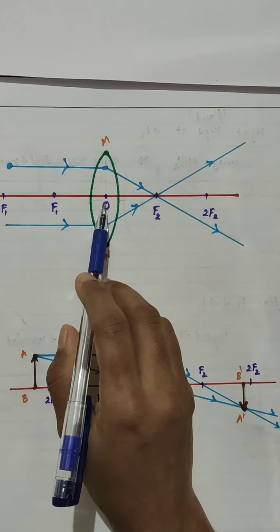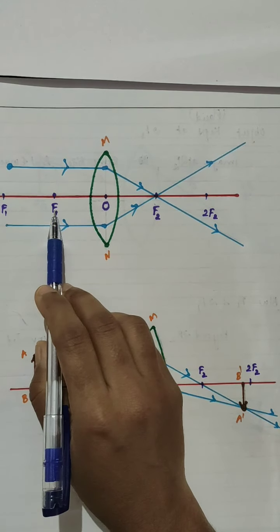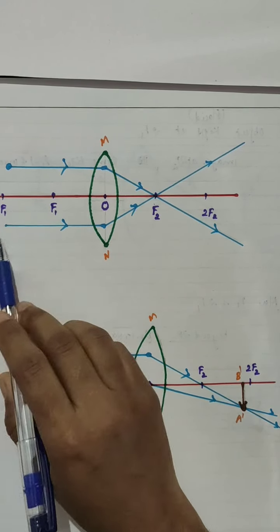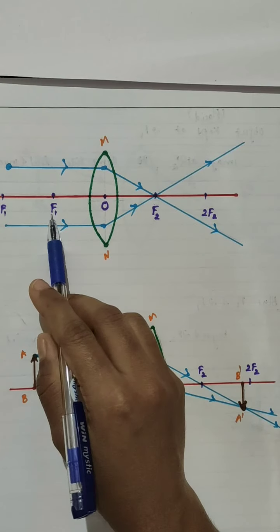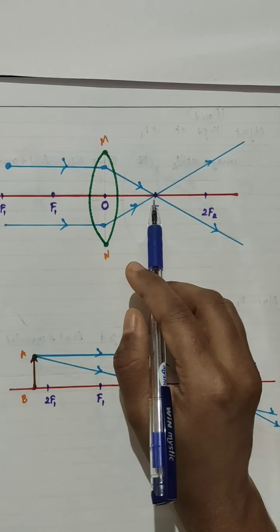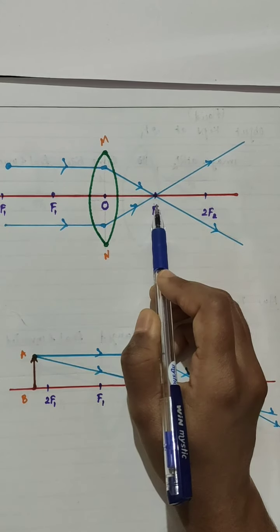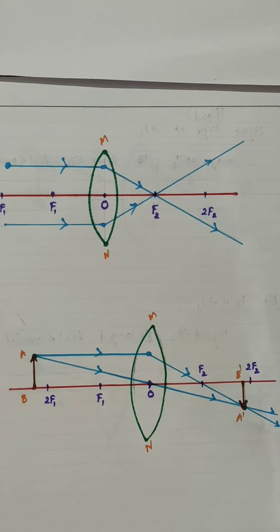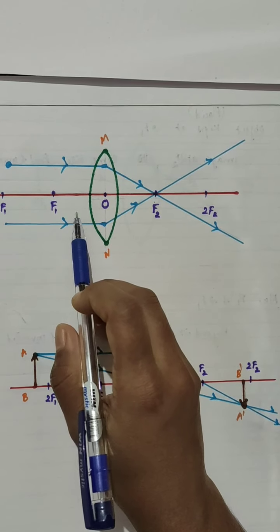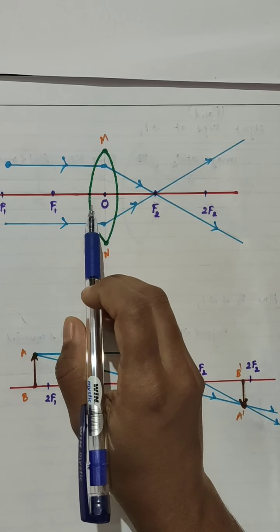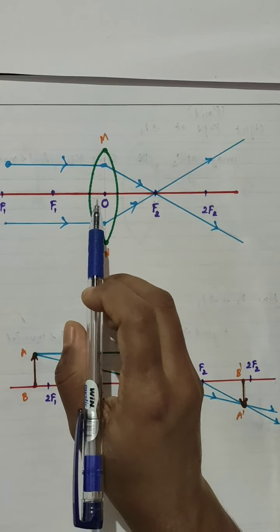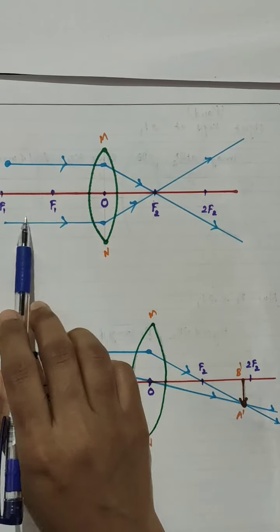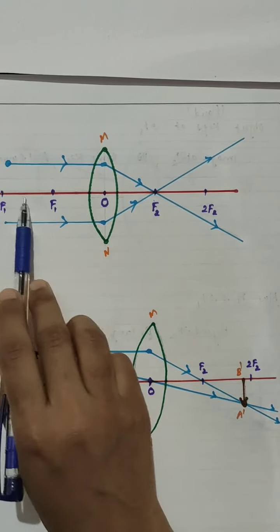If the distance from O to F1 is 3 centimeters, then from O to 2F1 it will be 6 centimeters — that is twice the focal length. Similarly, O to F2 is the focal length of the convex lens, so if it is 3 centimeters, then O to 2F2 must be 6 centimeters. Now we are considering the position of the object at infinity, so the rays coming from infinity can be considered as parallel rays.